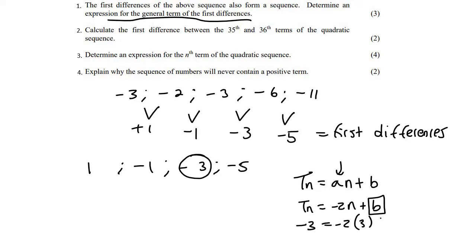Plus B. And then if you had to go ahead and solve B, you would find out that B is equal to three. And so the formula for that one is going to be Tn equals to minus 2N plus 3.